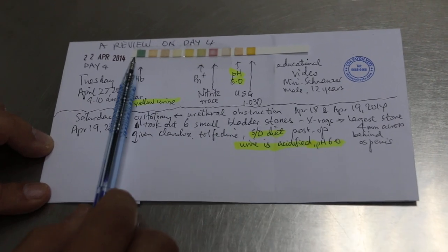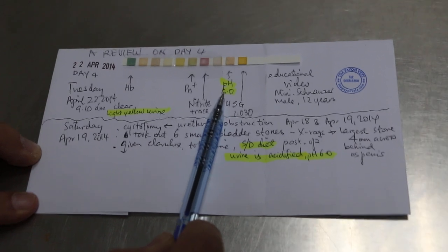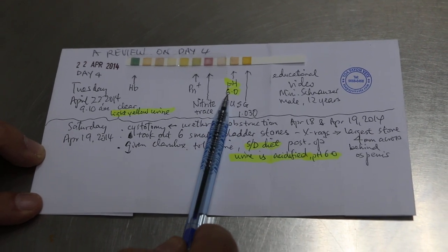So the dog has been on SD diet for 2 days, so you can see that the pH is 6.0. It shows that the SD diet does acidify the urine.